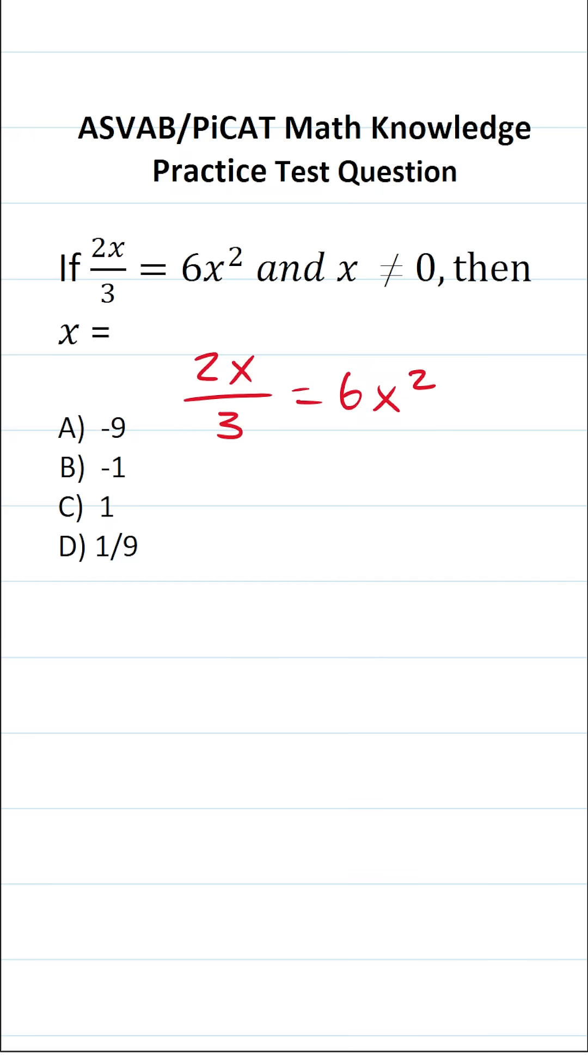The first thing I'm going to do in an effort to solve this equation for x is to get rid of this 3 from the denominator of 2x. In other words I'm going to multiply both sides of this equation by 3 because in doing so these 3s cancel out leaving me with 2x over here. What is 6x squared times 3? That's going to become 18x squared.